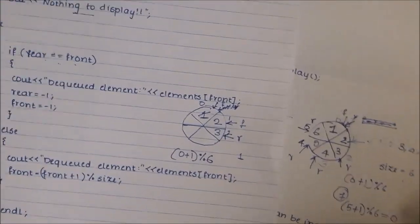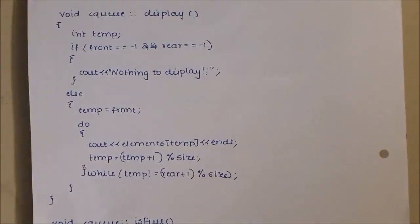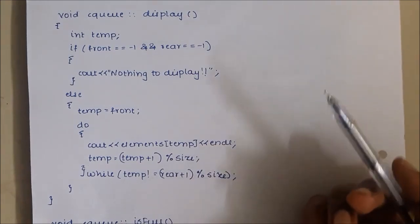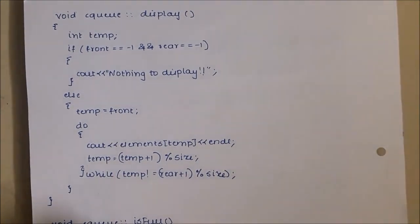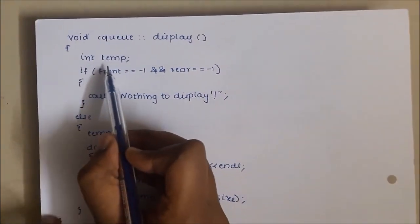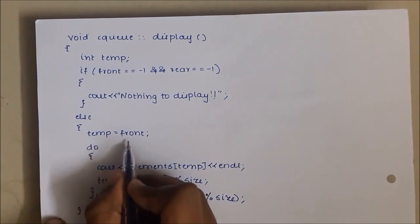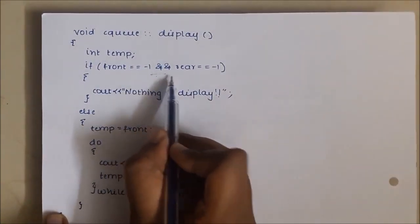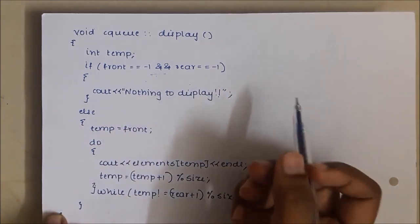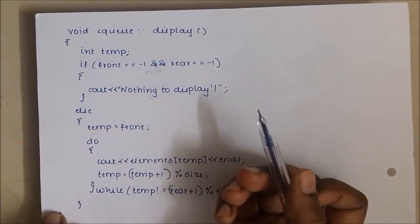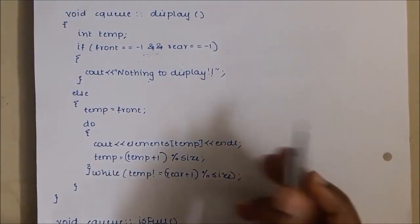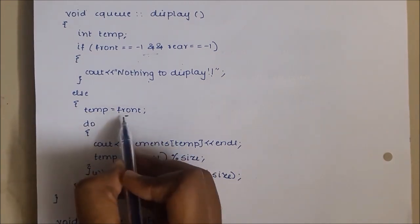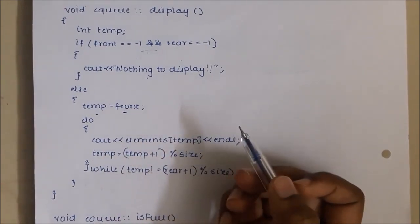Now we will see the display function. Before displaying any element, we first check if the queue is empty. I have taken a temporary integer variable to hold the index pointed to by front. If front and rear are minus 1, the queue is empty and we display a message: nothing to display. Otherwise, if the queue is not empty, we assign the index pointed to by front to temp, since we always start displaying from the front of the queue.